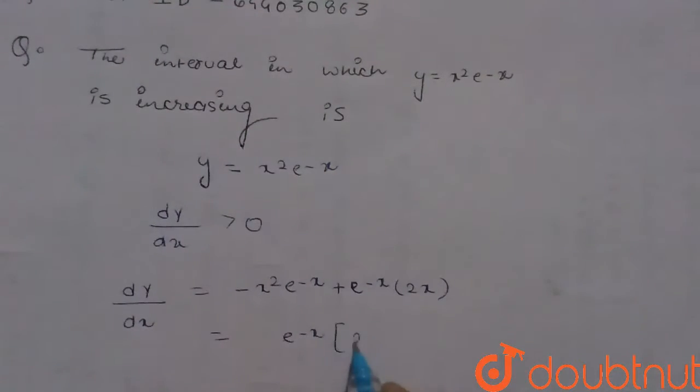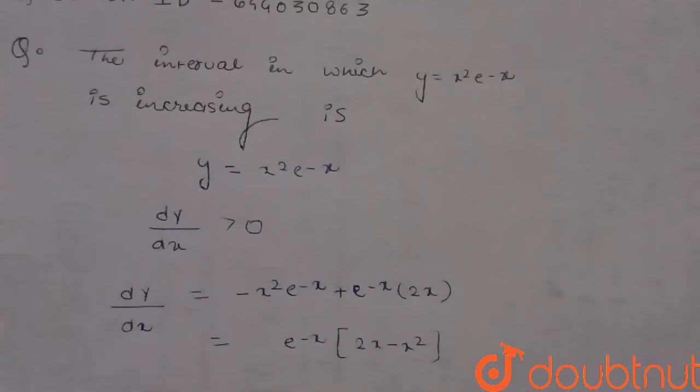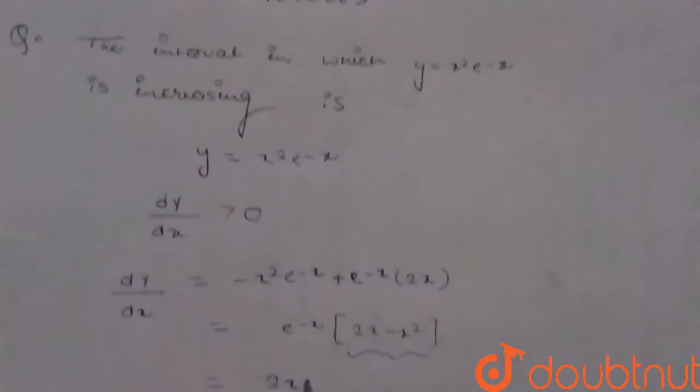As we know that e raised to the power minus x is an exponential function, so it is always positive. So we need to just apply the condition on this particular expression. So 2x minus x squared should be greater than zero.